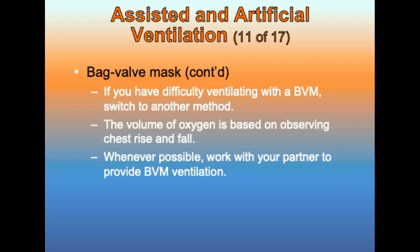The BVM can perform under extreme heat and cold conditions. Tidal volume capacity: adult BVM is 1,200 to 1,600 mL; pediatric is 500 to 700 mL; infant is 150 to 240 mL. The volume delivered is based on observing chest rise and fall. When using a BVM with high-flow oxygen on an adult, squeeze the bag just enough to cause a noticeable rise of the patient's chest — only about 600 mL. By delivering just enough tidal volume to see chest rise and fall, the risk of gastric distension and associated complications are reduced.